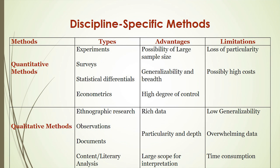The limitations for the quantitative method are loss of particularity and high cost — quantitative methods are very costly. For qualitative, the limitations are low generalizability, overwhelming data, and it is usually very time-consuming.